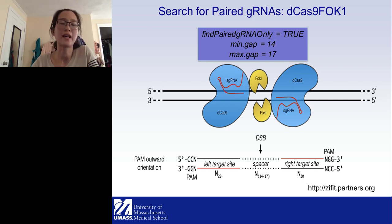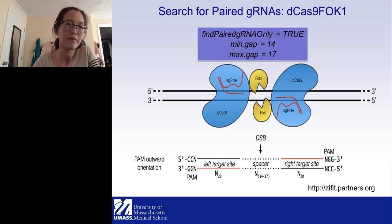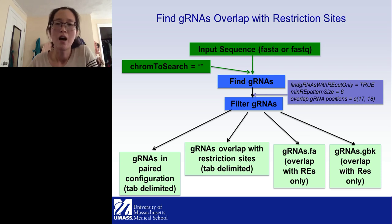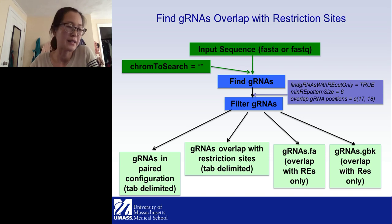You can also use a restriction site to monitor or screen mutation sites. To find guide RNAs with restriction sites overlapping the cleavage site, set findgRNAWithIEcutOnly to TRUE, set the minimum RE pattern size (default is 6), and set the overlap appropriately — for SpCas9 the cleavage size is 17–18. If you're using a different Cas9 system, change the overlap accordingly.